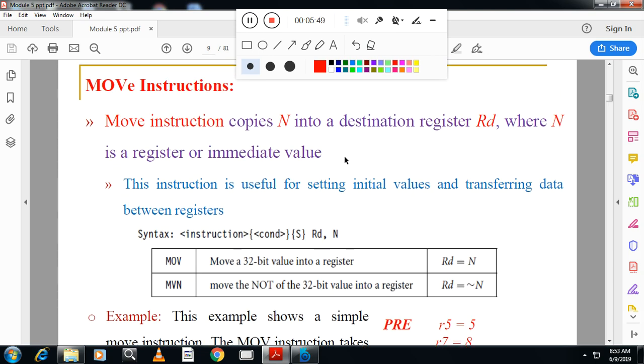MOVE instruction. In MOVE instruction we have two versions: MOV, and MVN, that is MOVE the NOT of 32-bit value into the register, or MOVE the value into the register.